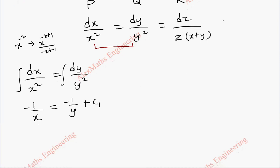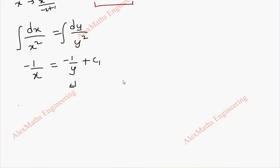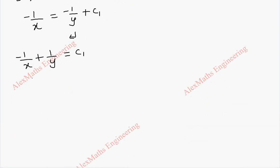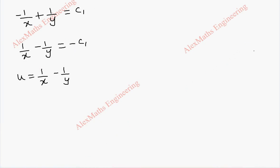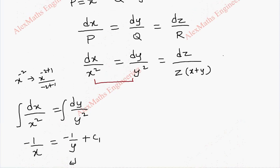Now, taking this term to the other side becomes plus 1 by x plus 1 by y equal to c1 and we can change the sign throughout: 1 by x minus 1 by y equal to minus c1. So, this is our u which is 1 by x minus 1 by y. If we want we can take LCM and give the answer or we can keep the terms as it is.